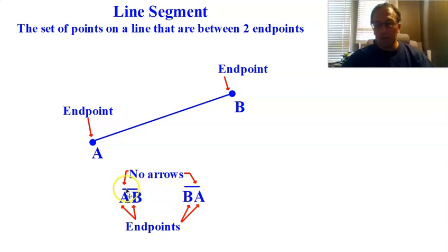Right? If this was a line, it would have arrows at the end, saying it's a line. No arrows. No arrows on my segment either, right? Because it stops. So no arrows on my symbol, because it stops. Okay? Always name it by the endpoints. There's no arrows.